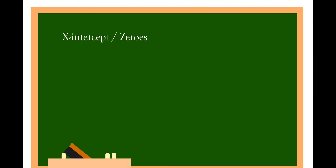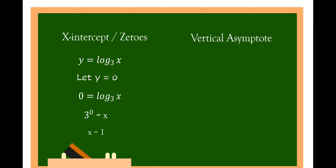How to find the x-intercept and zeros: for y is equal to log of x to the base of 3, let y equal to zero, then change logarithmic form into exponential form. We have 0 is equal to log of x to the base of 3; changing into exponential form gives 3 raised to 0 is equal to x. Since 3 raised to 0 is equal to 1, therefore x is equal to 1. For the vertical asymptote, equate x to zero, so the vertical asymptote is x is equal to 0.